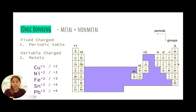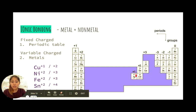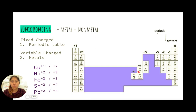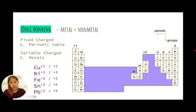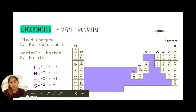There are three fixed charge exceptions in the transition metal section. Silver always has a +1 charge, zinc always has a +2 charge, and aluminum always has a +3 charge. So aluminum, zinc, and silver are not variable charge metals — they are fixed charge metals with charges of +1, +2, and +3 respectively. These are the only exceptions.